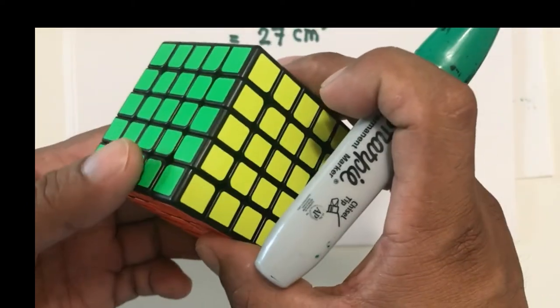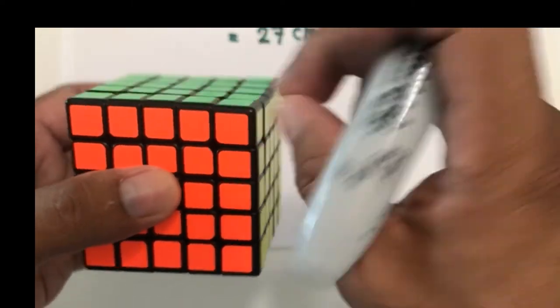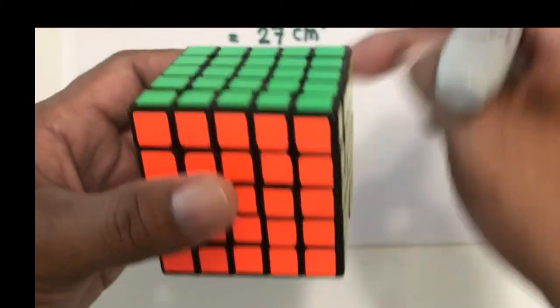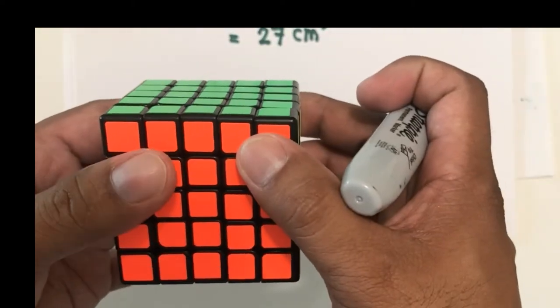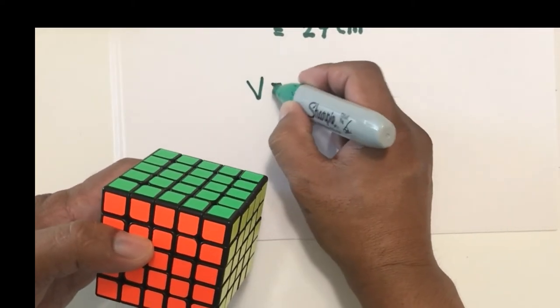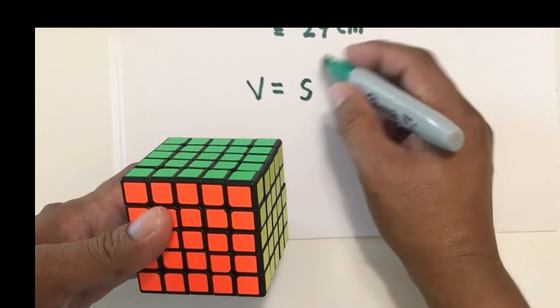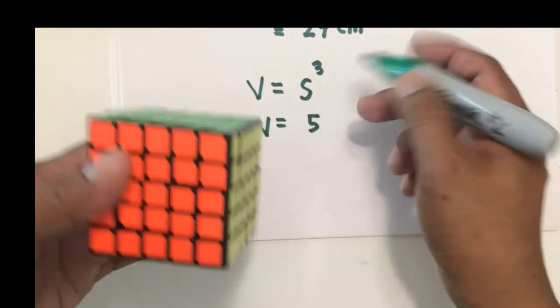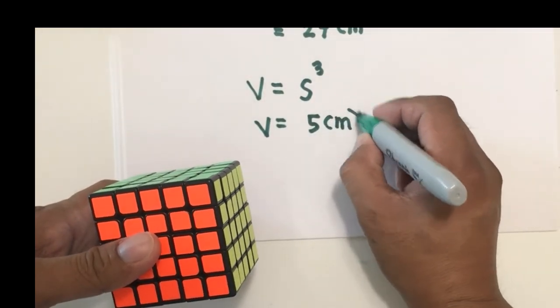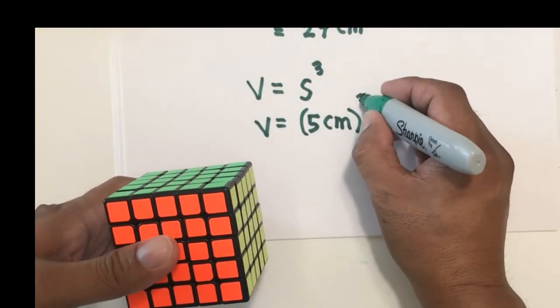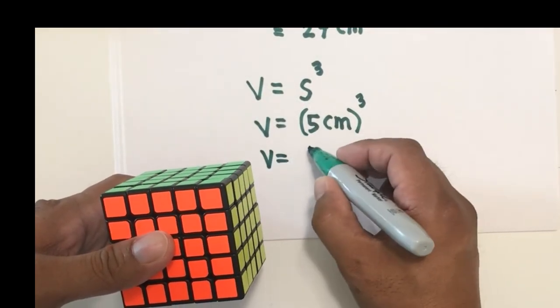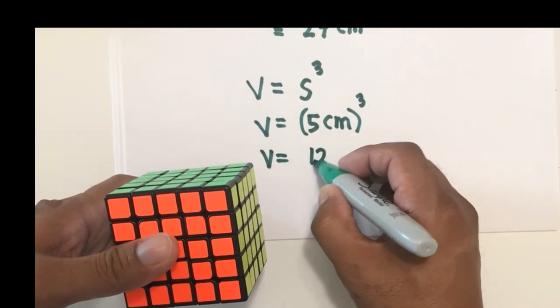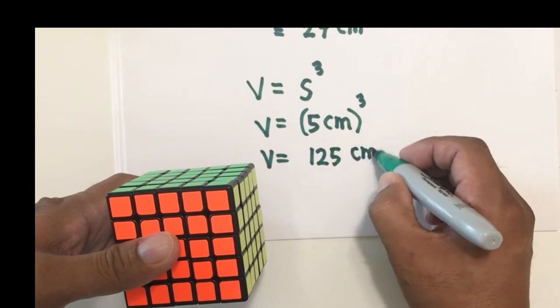What if we have this 5 by 5 Rubik's cube? What is the volume of this? So again, you think of the volume as the number of these smaller cubes that can fit into the 5 by 5 cube. And to find the volume, it's easy to compute. You just have to multiply the side times the side times the side. So V equals 5. Now let's assume again that the unit here is centimeter. So 5 centimeters cube. And so we have a volume of 5 times 5, 25 times 5 is 125 cubic centimeters.